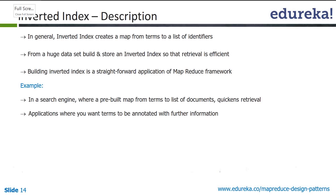In text analytics, there are algorithms to figure out what a piece of data actually means. We figure out entities in the text — it could be a person name, places, or organization. You could build an inverted index with sentences as your map key, and the annotated terms on that sentence as the value. This helps in downstream processing of analytics on that initial text processing.